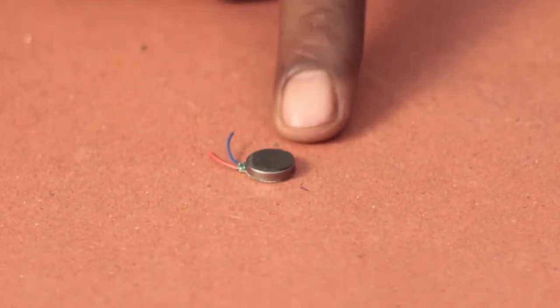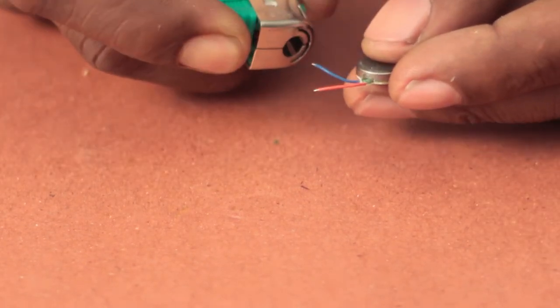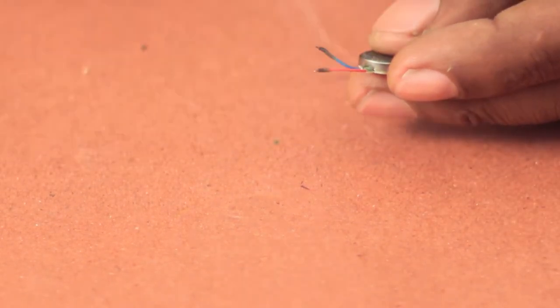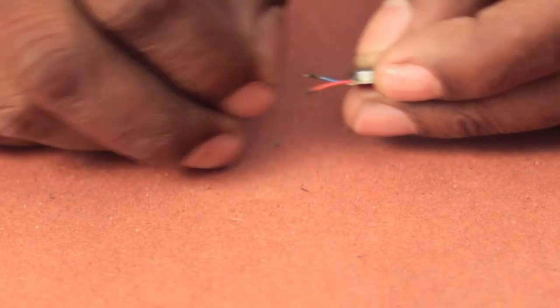One of these flat vibrator motors needs to be connected. The wires are too fragile for a wire stripper so it's best to burn them with a lighter and quickly peel the insulation.